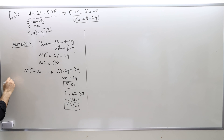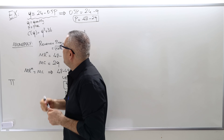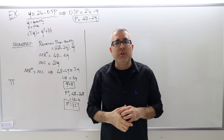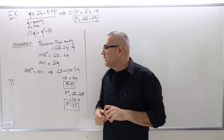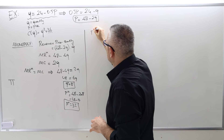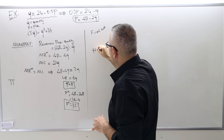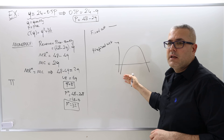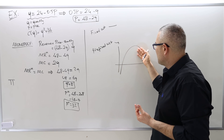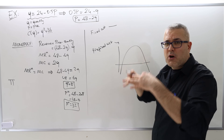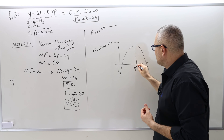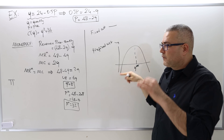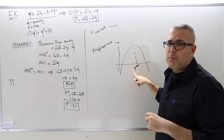When there is a fixed cost, this critical point may actually not be the optimal point. If there's no fixed cost, the profit function will be negative for some quantities and positive for others, and the quantity from MR equals MC gives the optimal output. But if there's a fixed cost, the profit function may always be negative, meaning even the maximum profit is negative.